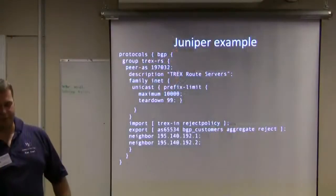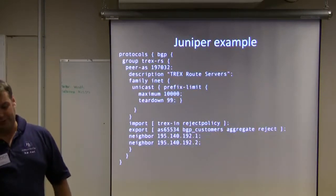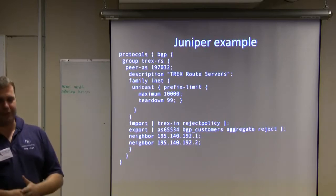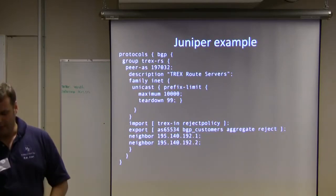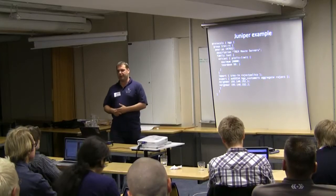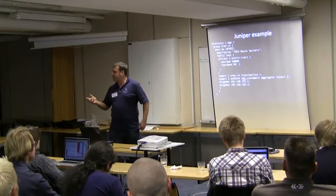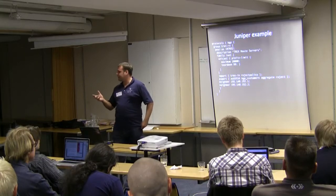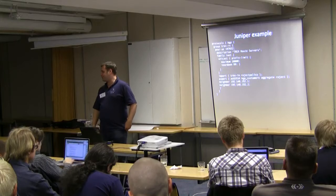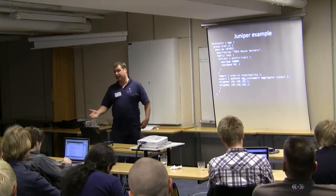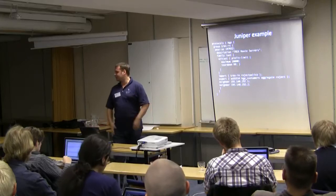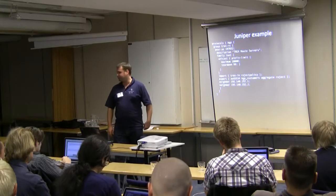I've also put a Juniper example of how to configure a route server session, although it kind of looks like a regular peering session. In terms of IRR filtering, what you tend to do is define your import policy. At the moment at Trex there isn't an AS set for route server peering, but if that's the one thing stopping you from setting up a route server peering because you need to express it in IRR, there's probably some discussion to be had if your concerns are based around filtering.